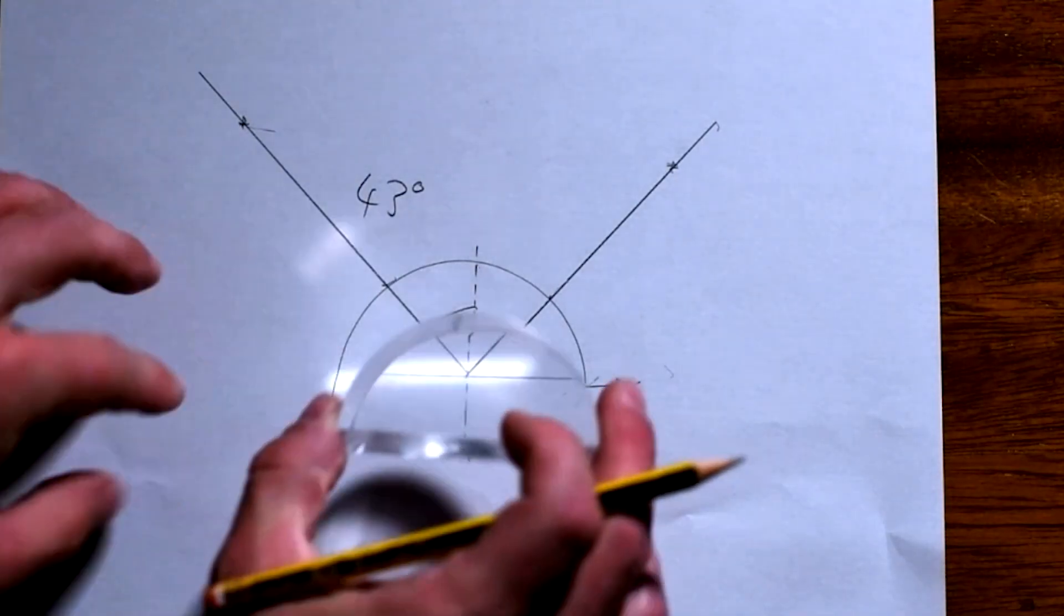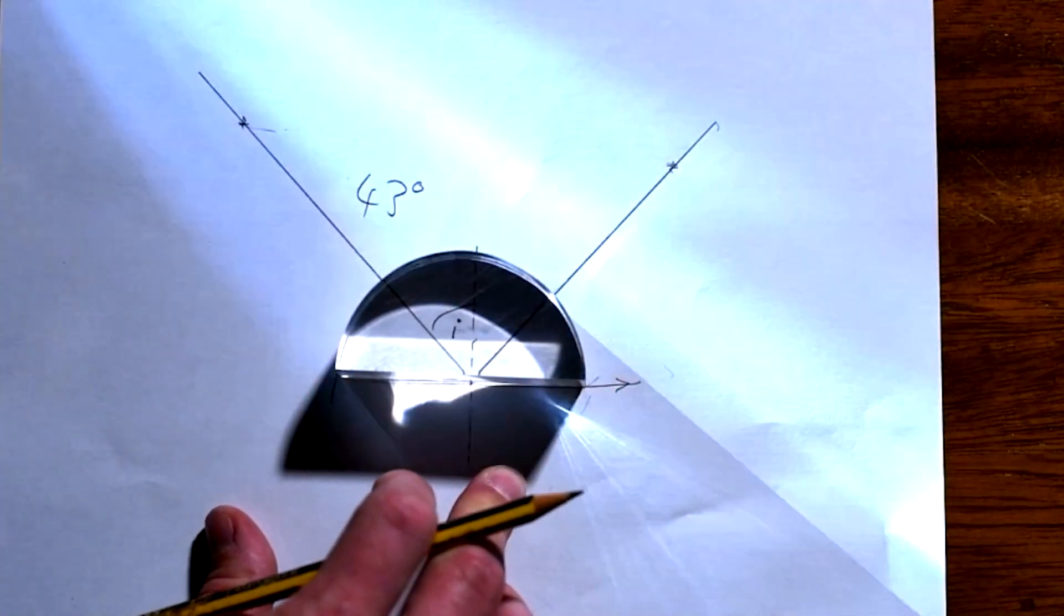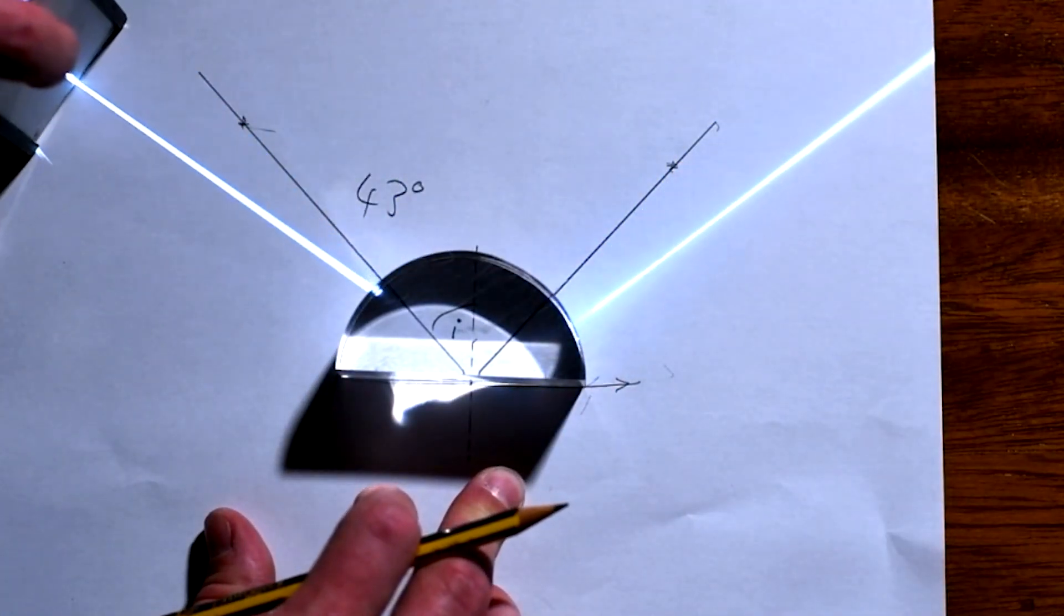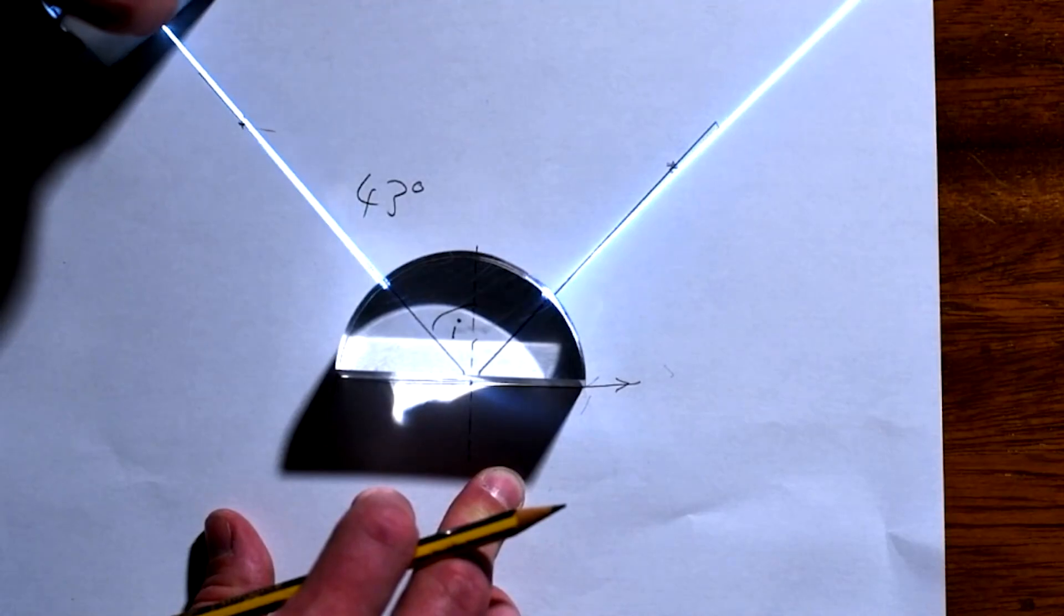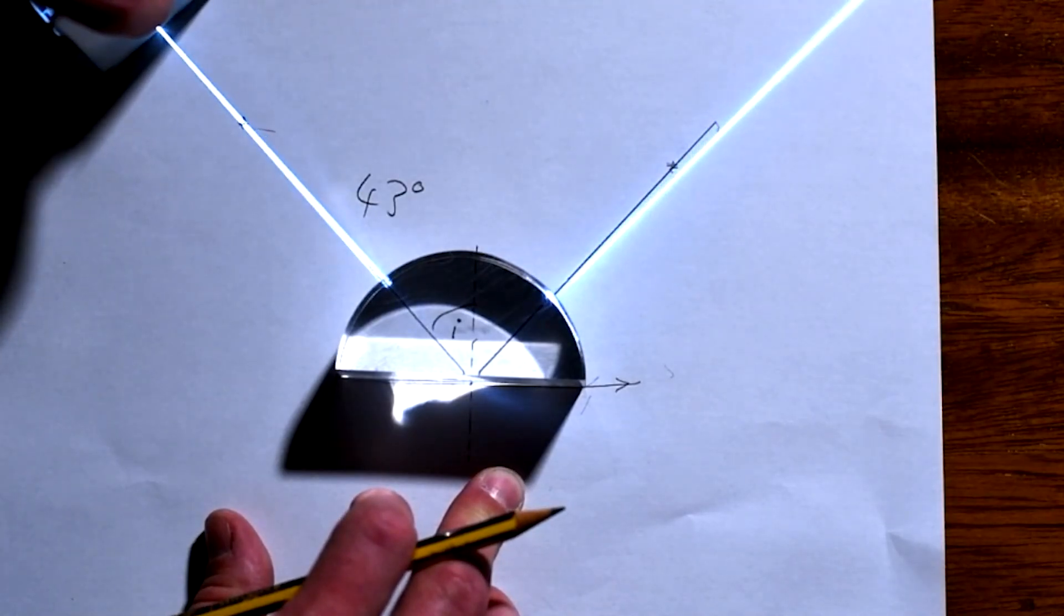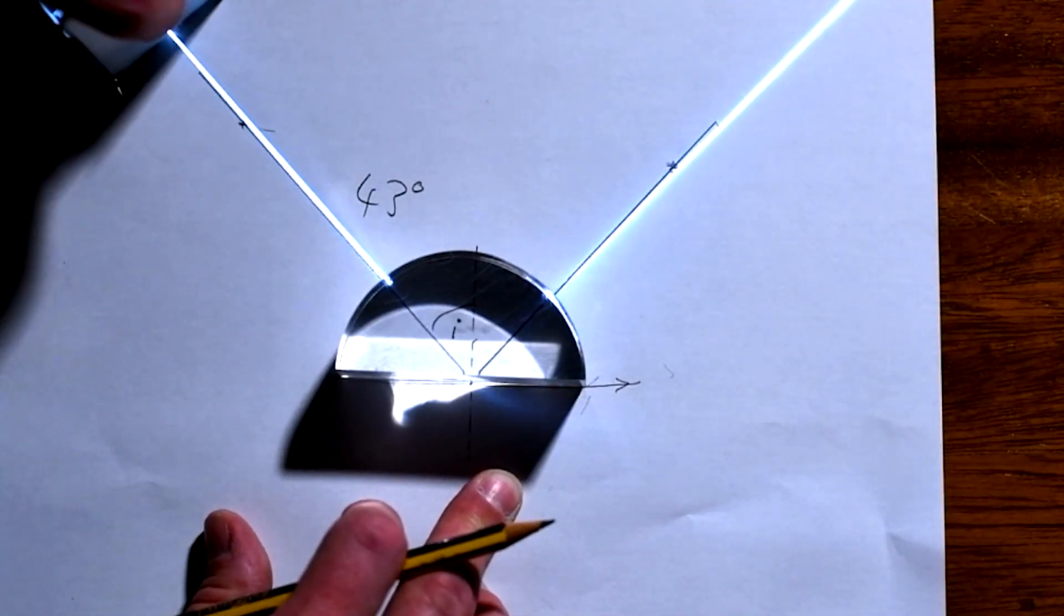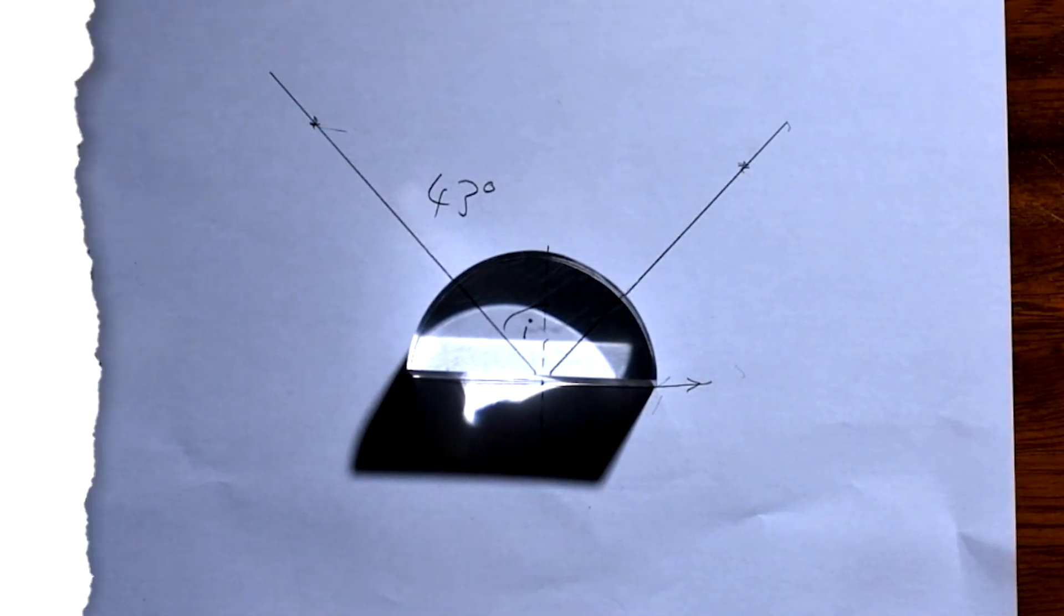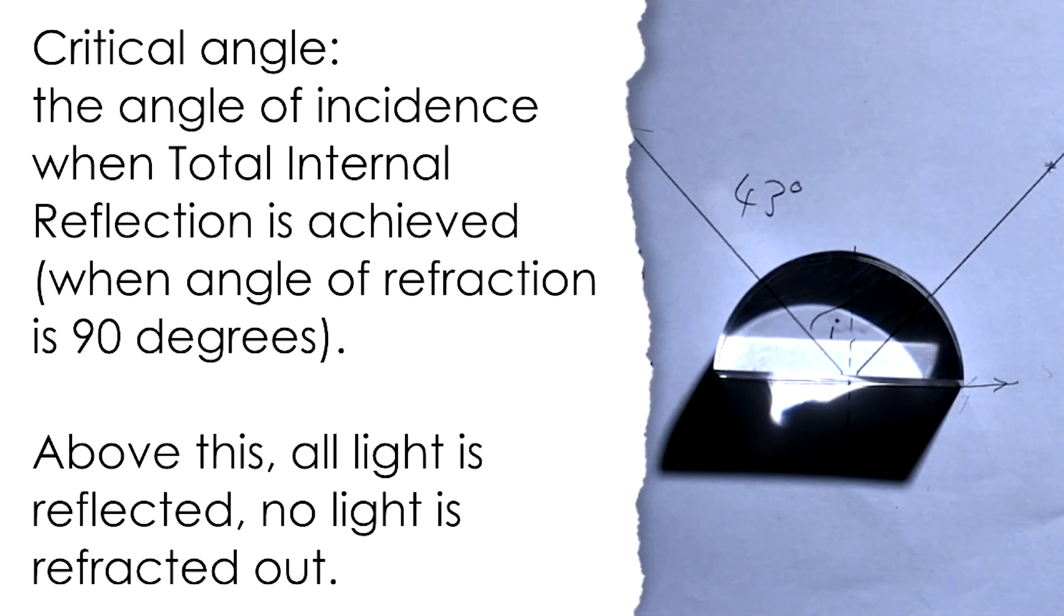Of course, if I increase my angle of incidence past that, then we're just going to get more reflection. But we're concerned with this angle at which it happens for the first time right there. This angle of incidence is now called the critical angle. The critical angle is the angle of incidence above which total internal reflection happens.